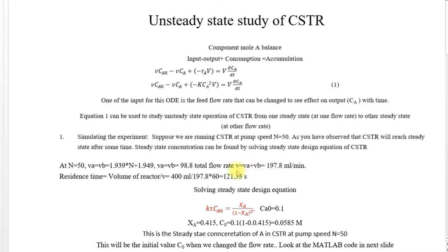Total flow rate is this. You can calculate the residence time by dividing the volume of reactor by volumetric flow rate. So this is 121.33 seconds, the residence time for this flow rate.